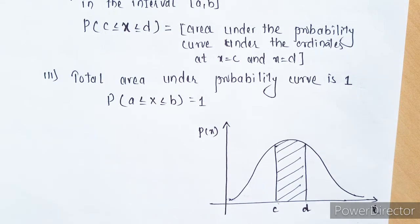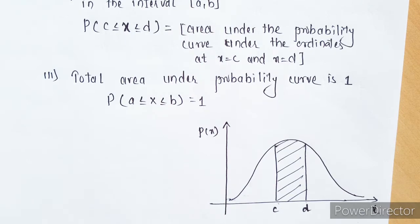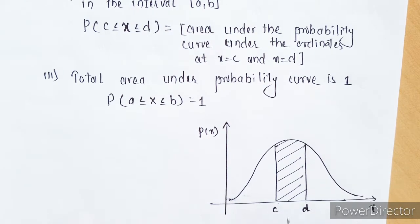Whenever we talk about a continuous random variable, it will always be in terms of intervals, whereas if it is discrete it will be at a particular point. For example, suppose we are talking about throwing a die — for random variable 1 we have probability 1/6, for random variable 2 we have probability 1/6. Or suppose 0 heads: for 0 heads we have 1/2, for 1 head we have 1/2. So whenever we talk about a discrete random variable we talk about particular points, whereas in case of a continuous random variable we talk about a particular interval, right — from C to D or from D to another point E.